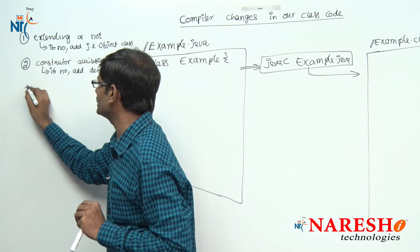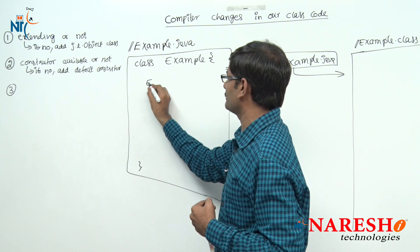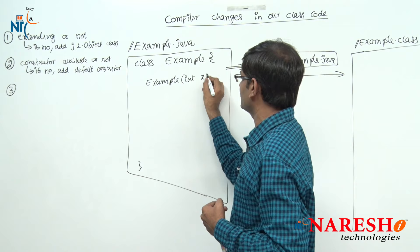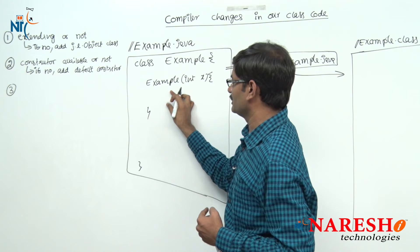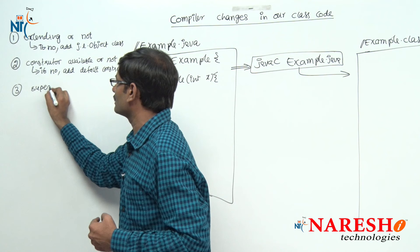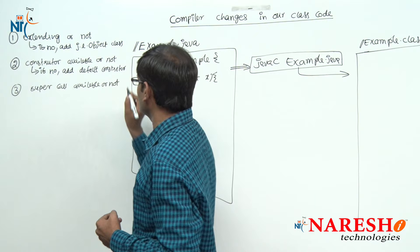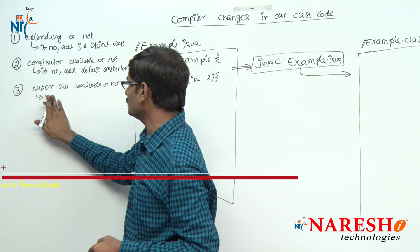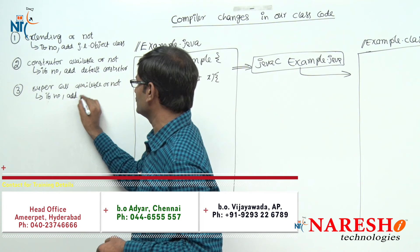Third change: let's say a programmer is writing one constructor — for example, a parameterized constructor. Inside that constructor, the compiler checks if a super call is available or not. If the super call is not available, then the compiler will add super(); — super parenthesis semicolon.